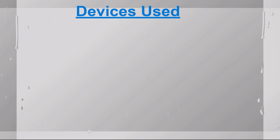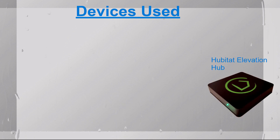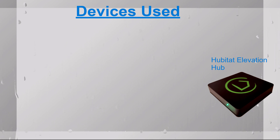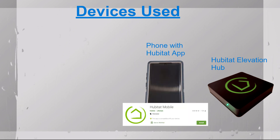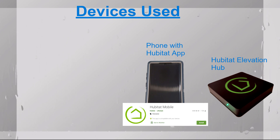But before going into the tutorial, let's take a look at the different devices we're going to be using for this dashboard. The first thing you need is the Hubitat Elevation Hub — this is the device that will allow all the automations and the dashboard to work so you can control your devices from anywhere. The other thing you'll need is an internet-enabled device; in this case, I'm going to be using a phone with the Hubitat app, but you can use a computer with the dashboard link.